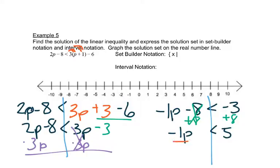And we get negative 1p is less than 5. Now we need to divide both sides by a negative 1, and because we're dividing by a negative 1, we need to change that middle sign, so we get p is greater than negative 5.